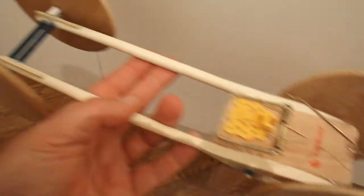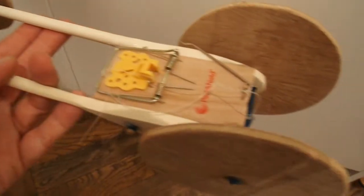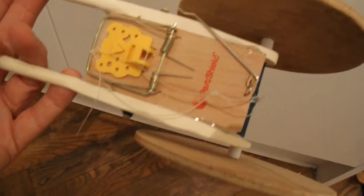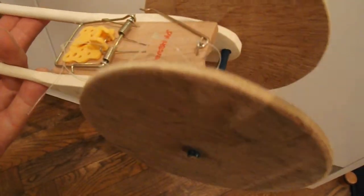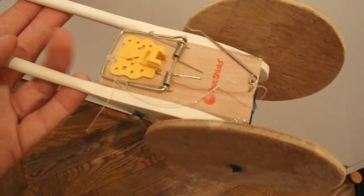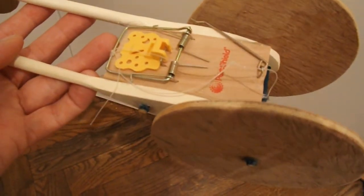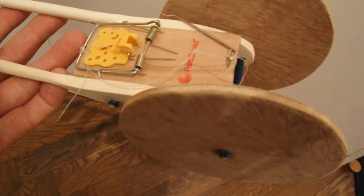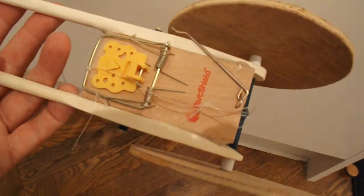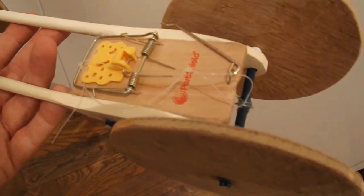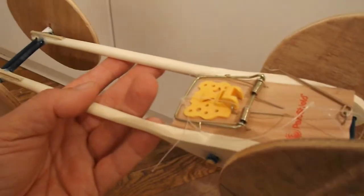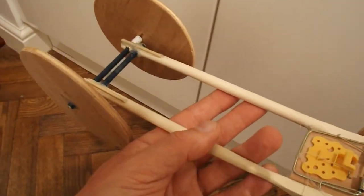And you saw it as a rubber band powered car, and now you've seen it as a mousetrap car. Very simple conversion. I haven't bothered to extend the lever arm at all, I've just kept it short, so it's not going to go for a great distance, but it starts off quickly and gets to where it's going quickly.